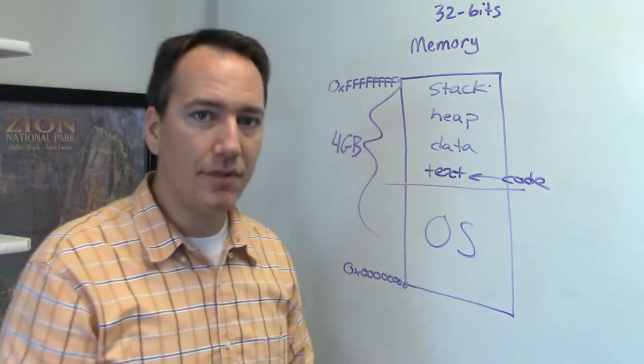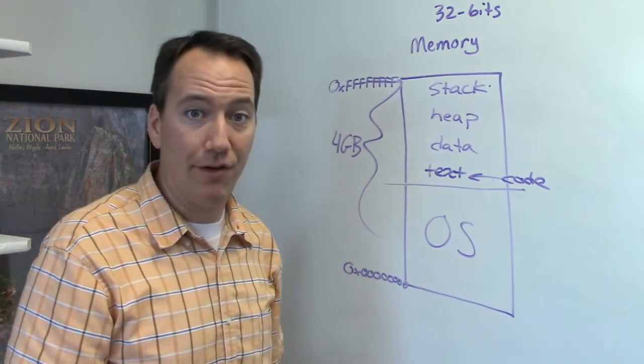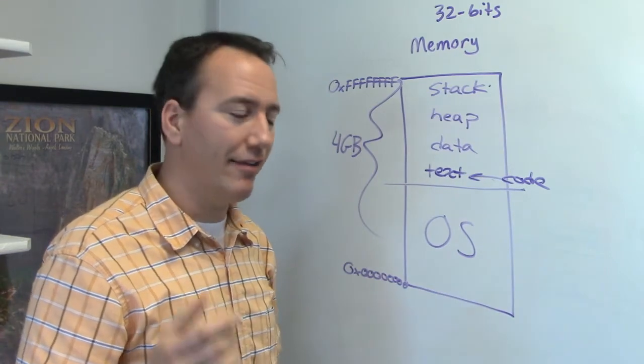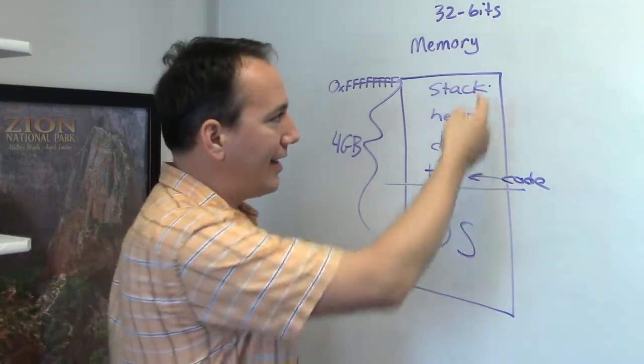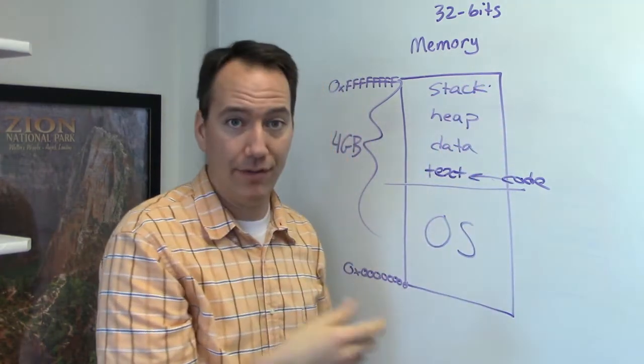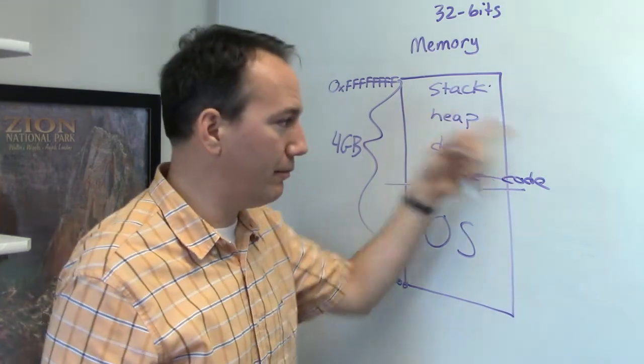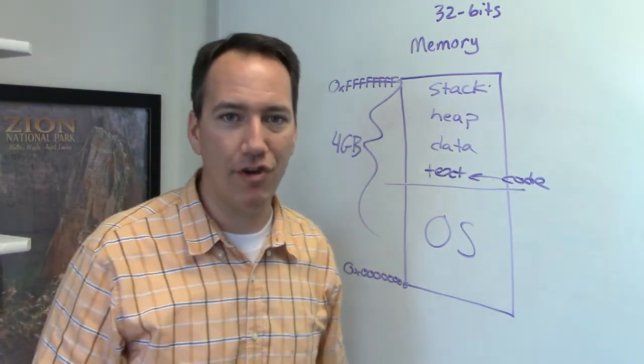So this is what memory looks like to an individual program. But the nice thing is, it's as if that program has all the memory to itself. And the reason is because of virtual memory. I can trick a computer program into thinking that all of this memory belongs to itself, but then use a translation process to actually put this into physical memory. Let me show you how that looks.